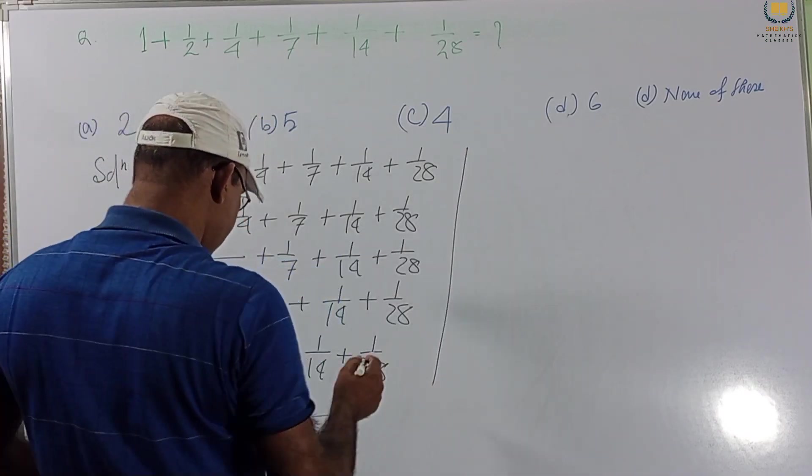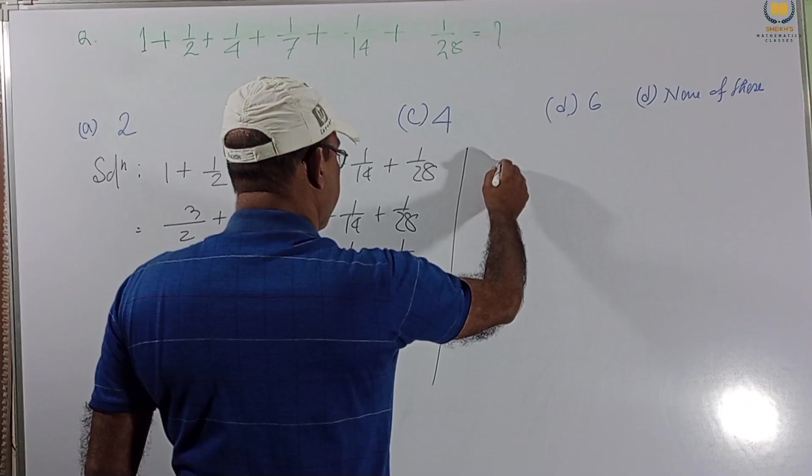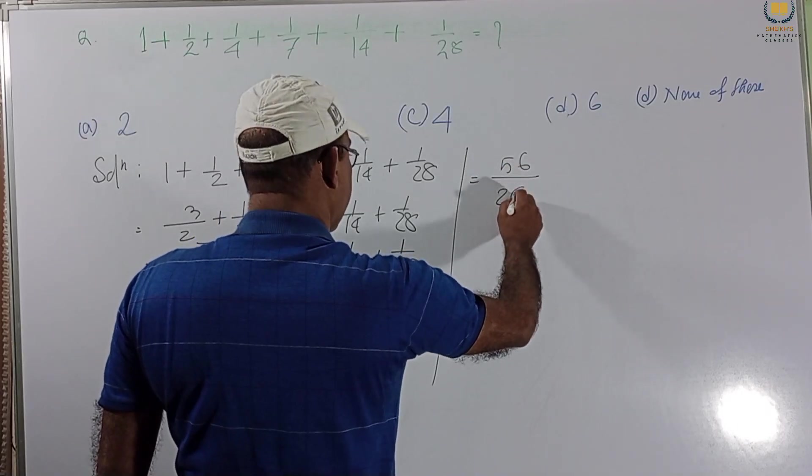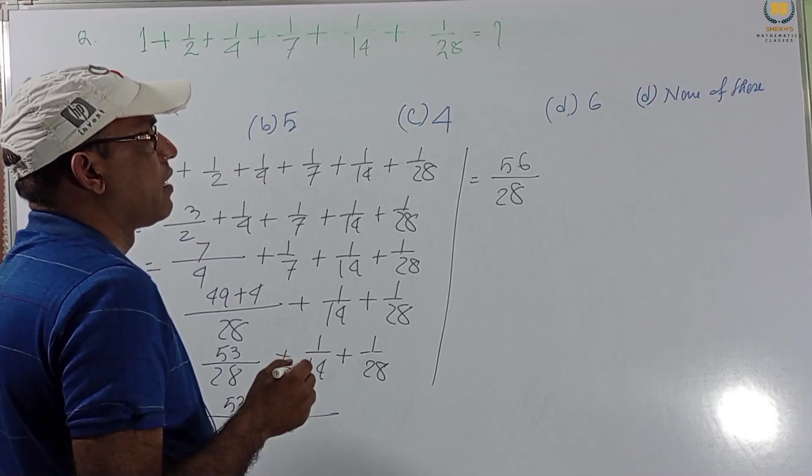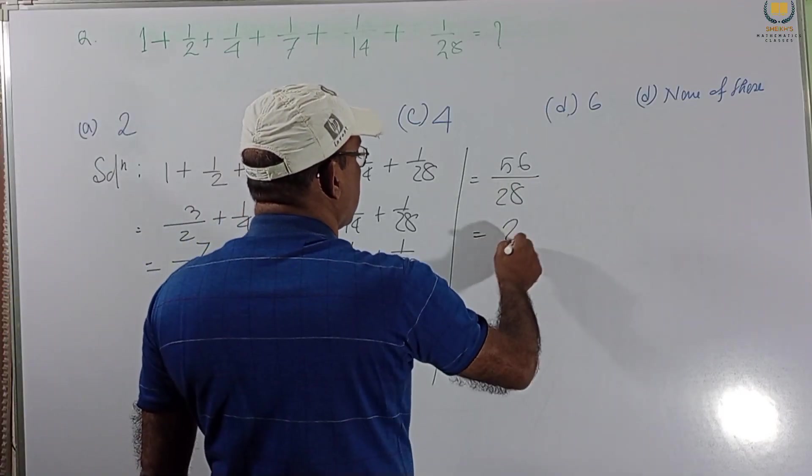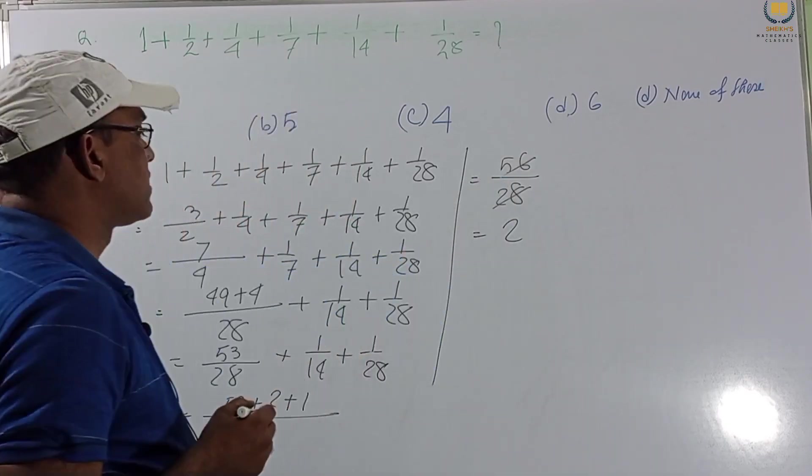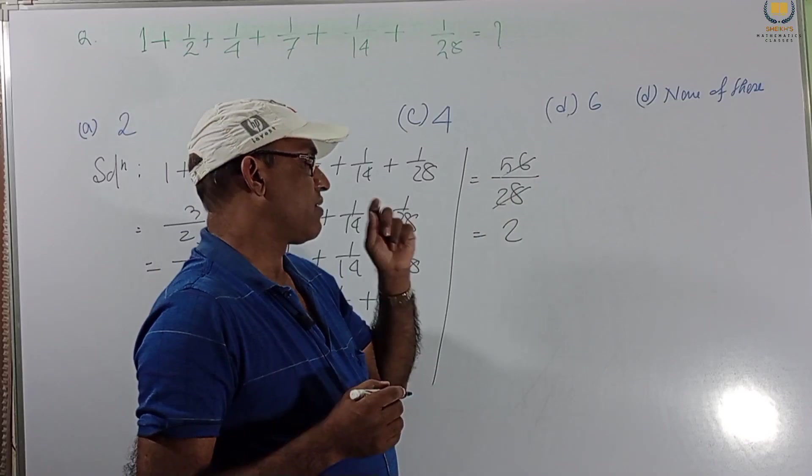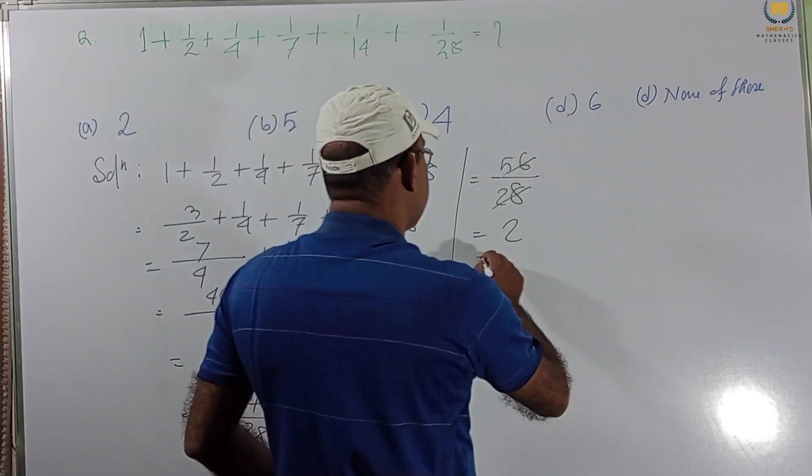We can write here. This is 56 by 28. We cancelling by this 2. So, answer 2. If we divide 56 by 28, answer we get 2. So, this is our answer. So, option A is our answer.